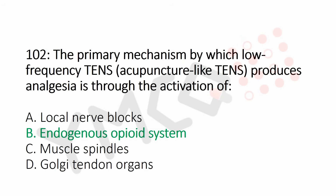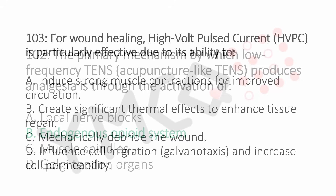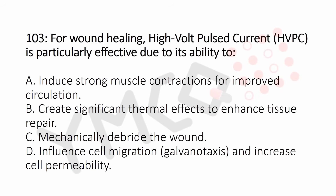Question number 103: For wound healing, high-volt pulsed current (HVPC) is particularly effective due to its ability to: Option A: induce strong muscle contraction for improved circulation. Option B: create significant thermal effect to enhance tissue repair. Option C: mechanically debride the wound. Option D: influence cell migration and increase cell permeability.